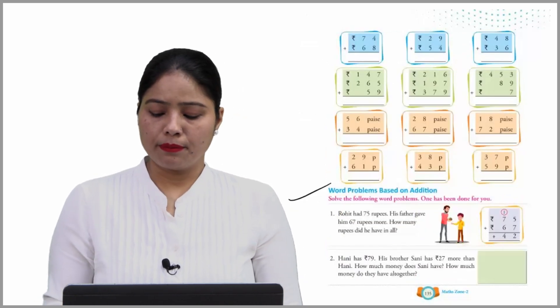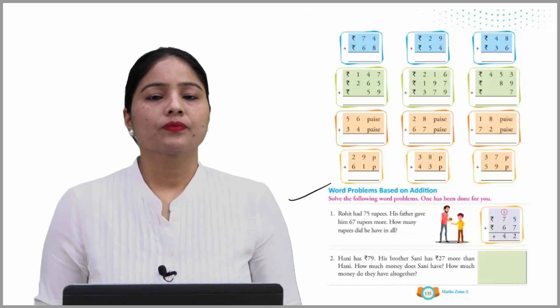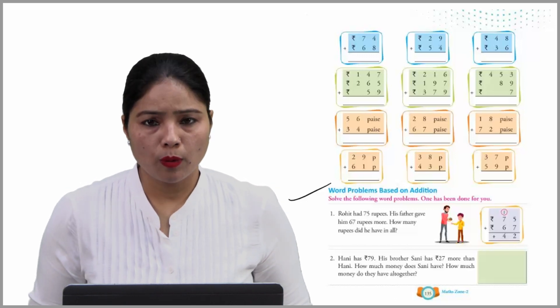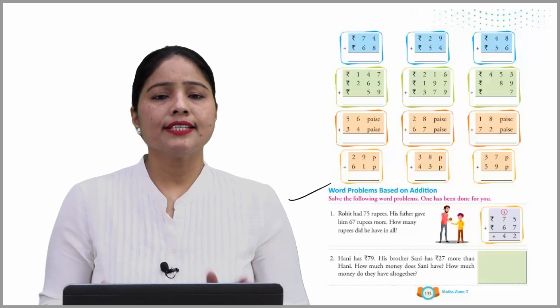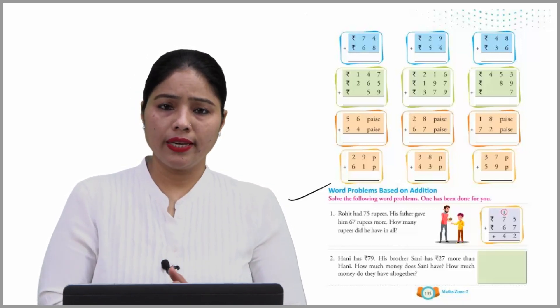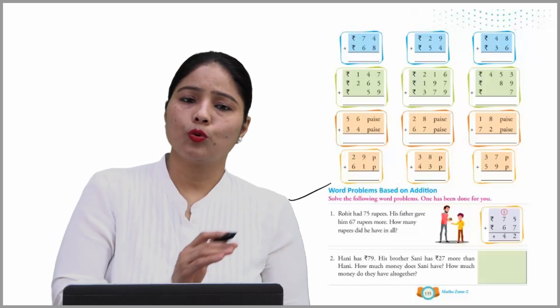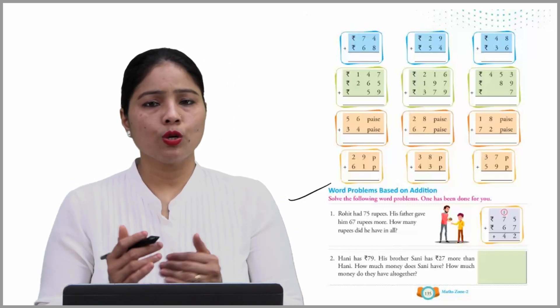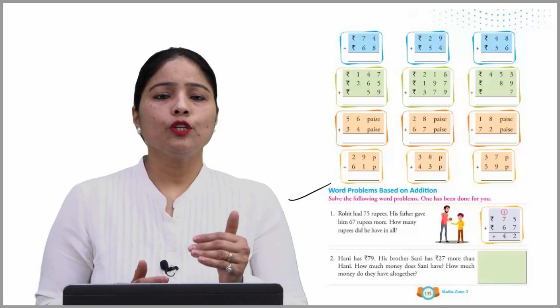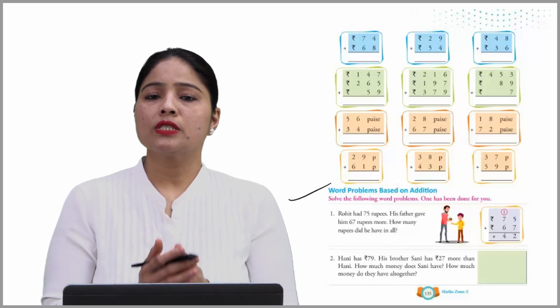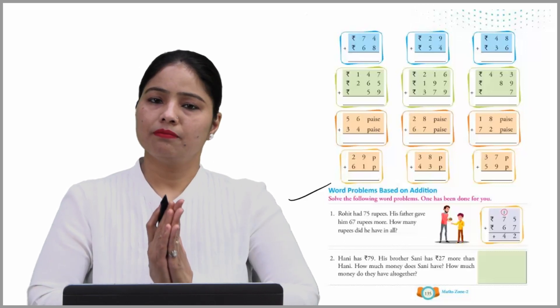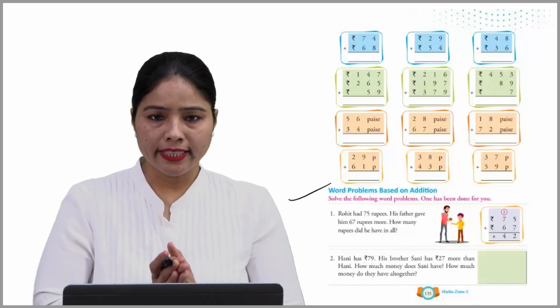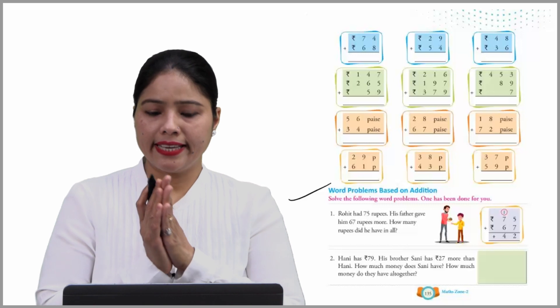Word problems based on addition. Solve the following word problems. One has been done for you. Rohit had 75 rupees. His father gave him 67 rupees more. How many rupees did he save in all? It's just a simple addition sum. This is already done, so we just move on to the next one.